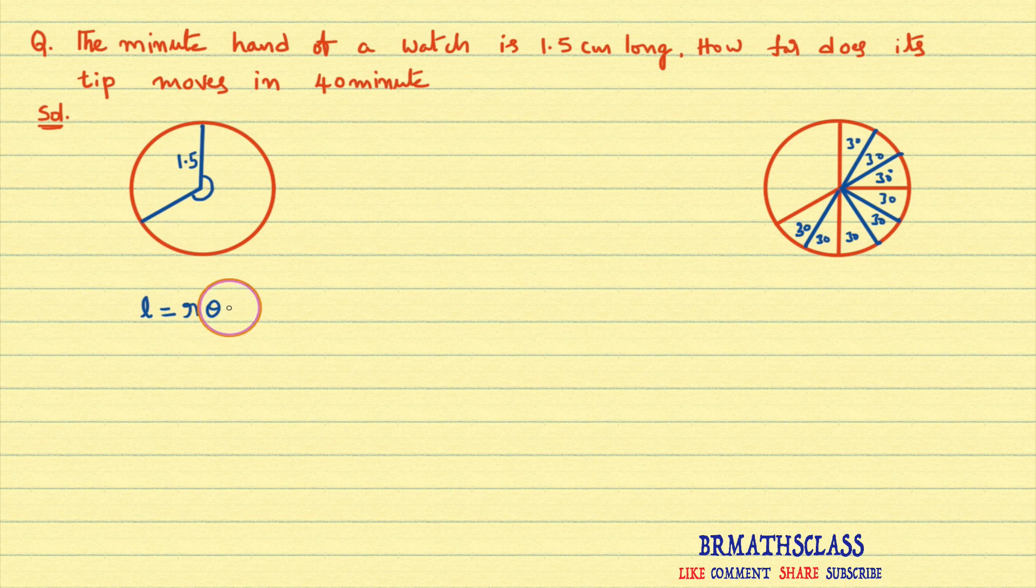Theta is an angle in radian measure. In this formula, theta is angle in radian measure. Here we want to find this angle. You see here in the diagram.